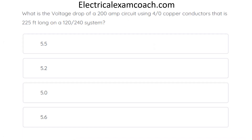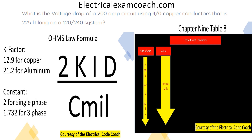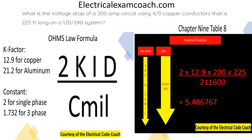What is the voltage drop of a 200-amp circuit using 4-aught copper conductors that is 225 feet long on a 120–240-volt system? The correct answer is 5.5. For this one, we use our Ohm's Law formula: 2KId over CM. The constant is 2, K-factor is 12.9 for copper, then current and distance divided by circular mils. We head to Chapter 9, Table 8 to get the circular mil value for 4/0 copper. The formula gives us: 2 × 12.9 × 200 × 225 ÷ CM = 5.48676, which we round up to 5.5.